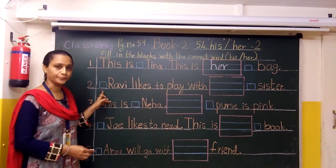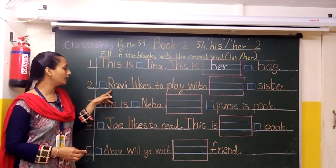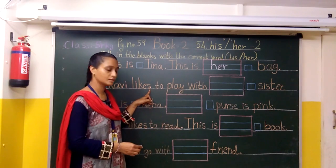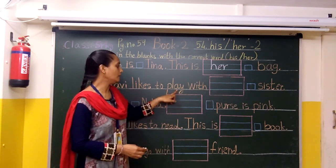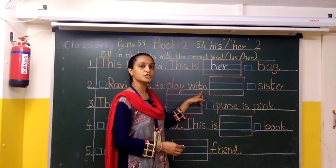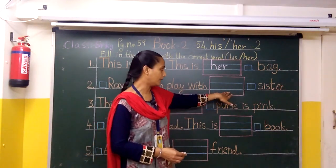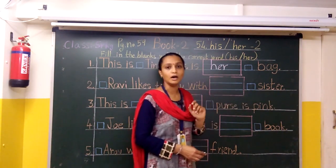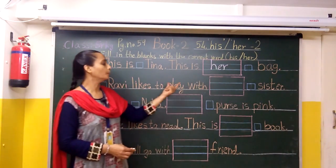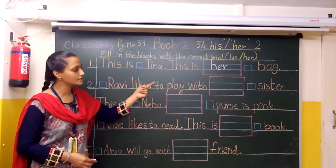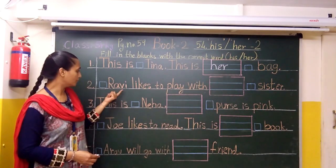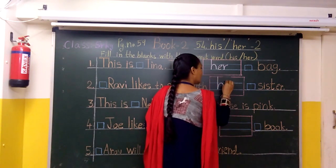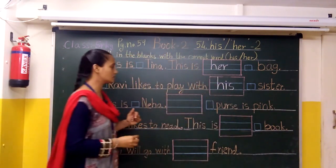Now here is the image of a boy. What is his name? Here is a blank. There is a sister — Robbie likes to play. Robbie is a boy. So here is 'his.' Robbie likes to play with his sister. Okay.